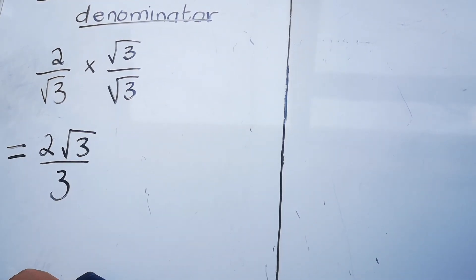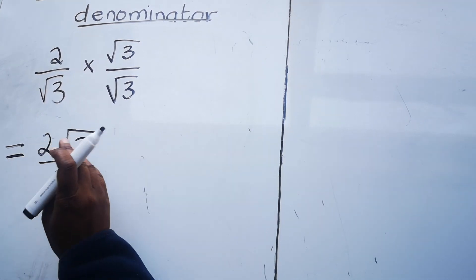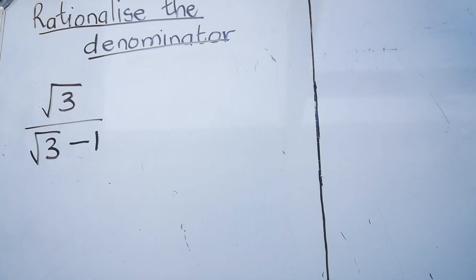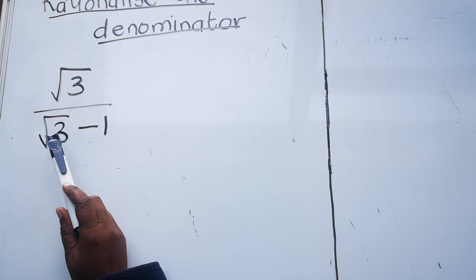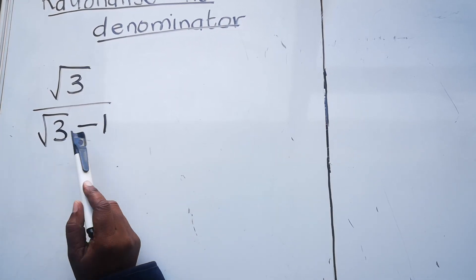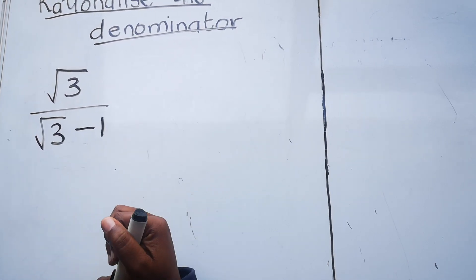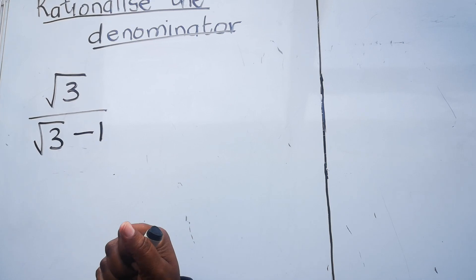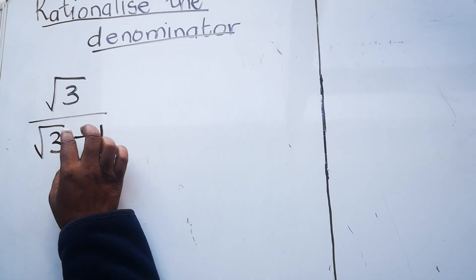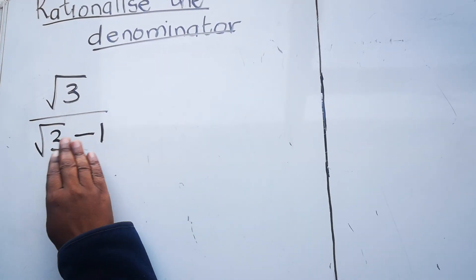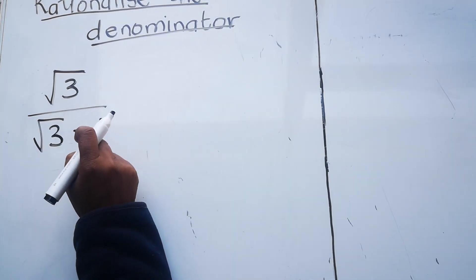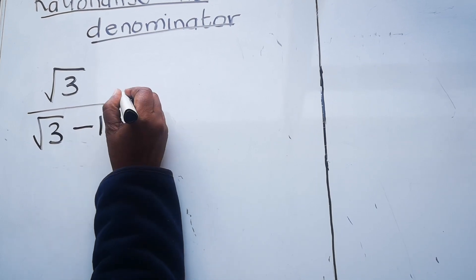Now let's look at an example where you have two terms as a denominator. Our denominator has two terms — we have one term, a minus sign, and another term. When we have this, we do it differently. Remember, this lesson is about rationalizing the denominator, which is the bottom part of the fraction. We want to get rid of the square root in the bottom part only. With a two-term denominator, you also write a fancy one, but you need to remember the difference of two squares.